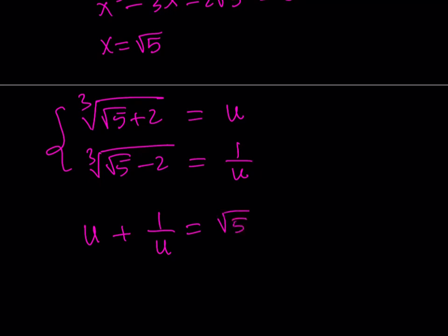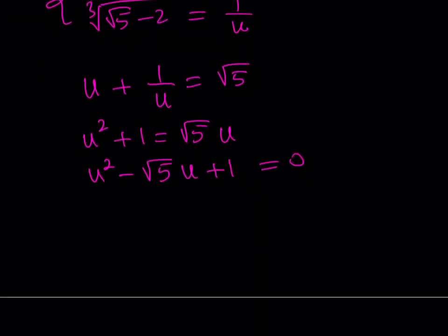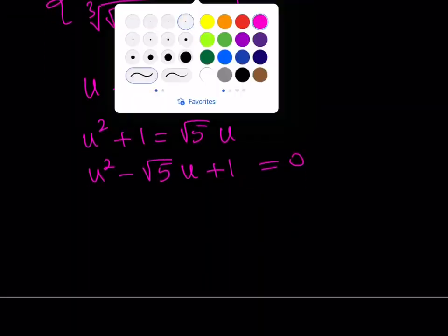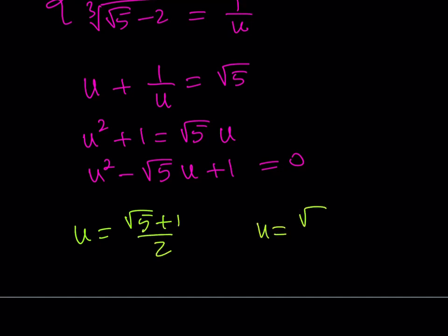Now I'm trying to find u, and u plus 1 over u becomes a quadratic equation. Multiplying both sides by u gives u squared plus 1 equals square root of 5 times u. Arranging it, we get u squared minus square root of 5 times u plus 1 equals 0. Using the quadratic formula, we get two solutions: u equals either root 5 plus 1 over 2, or root 5 minus 1 over 2.